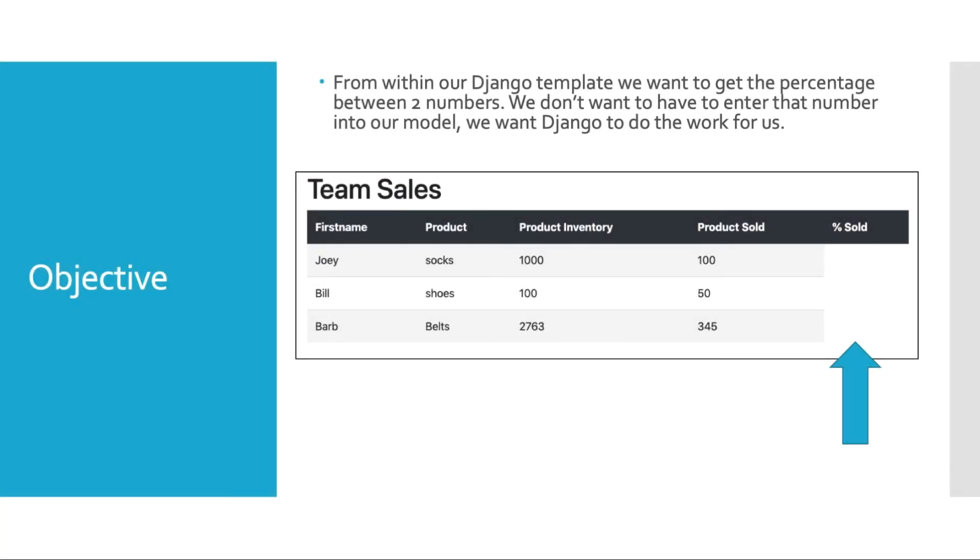So let's level set by talking about what our objective is here. From within our Django template, we want to get the percentage between two numbers. These numbers are stored within your model, within your database. We don't want to have to enter that number into our model. We want Django to do the work for us.